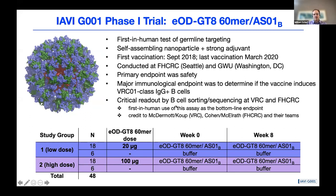The critical readout was B cell sorting and B cell receptor sequencing at the VRC and Fred Hutch — highly experimental medicine style, really looking under the hood to find out what kinds of B cells were turned on after one or two vaccine shots. We needed to know whether those B cell receptors had exactly the sequences we intended to elicit, whether it worked in everybody in the trial, how frequent those cells were, and how mutated they were. The trial had two groups — low dose and high dose — with 18 vaccine recipients and 6 placebo recipients each.